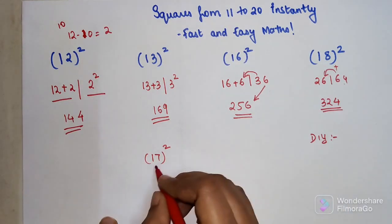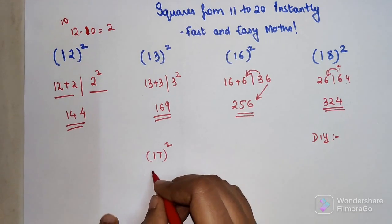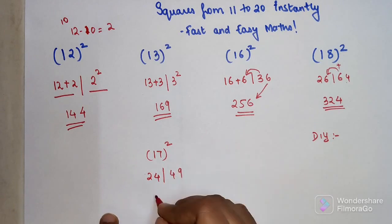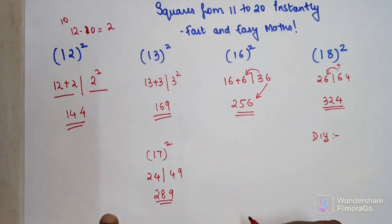So 17 squared will be nothing but 17 plus 7 is going to get you 24, and 49. So we have 24 plus 4 is 28, and 9 will come as is.